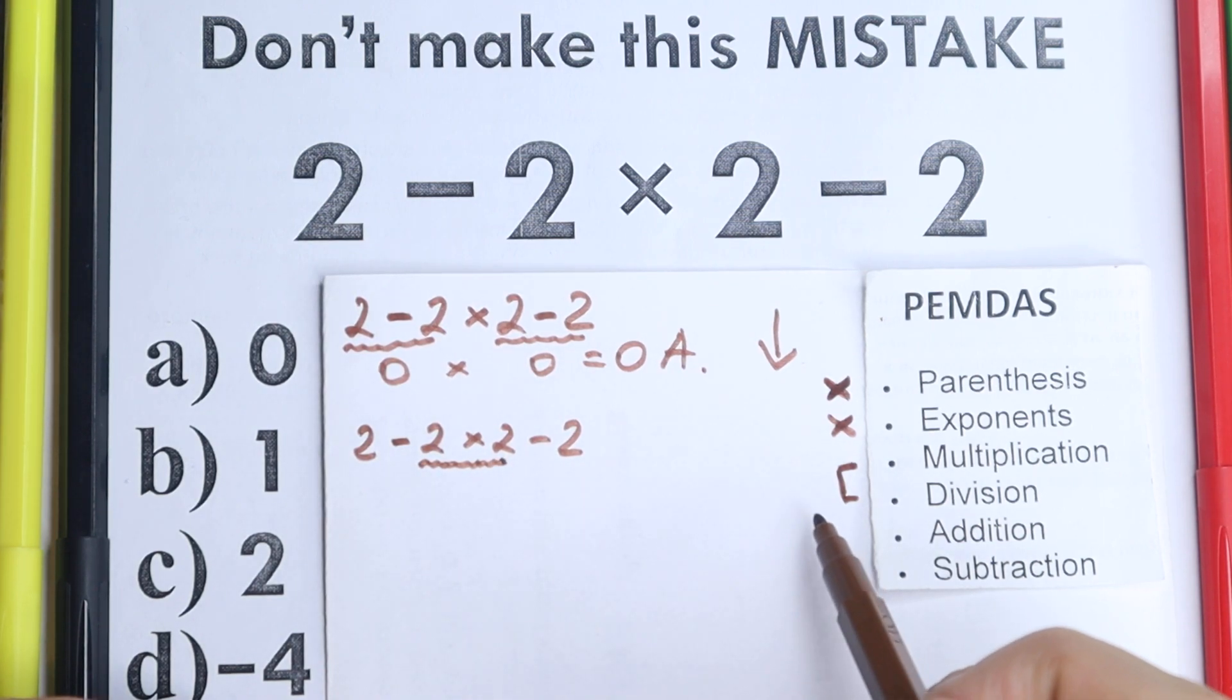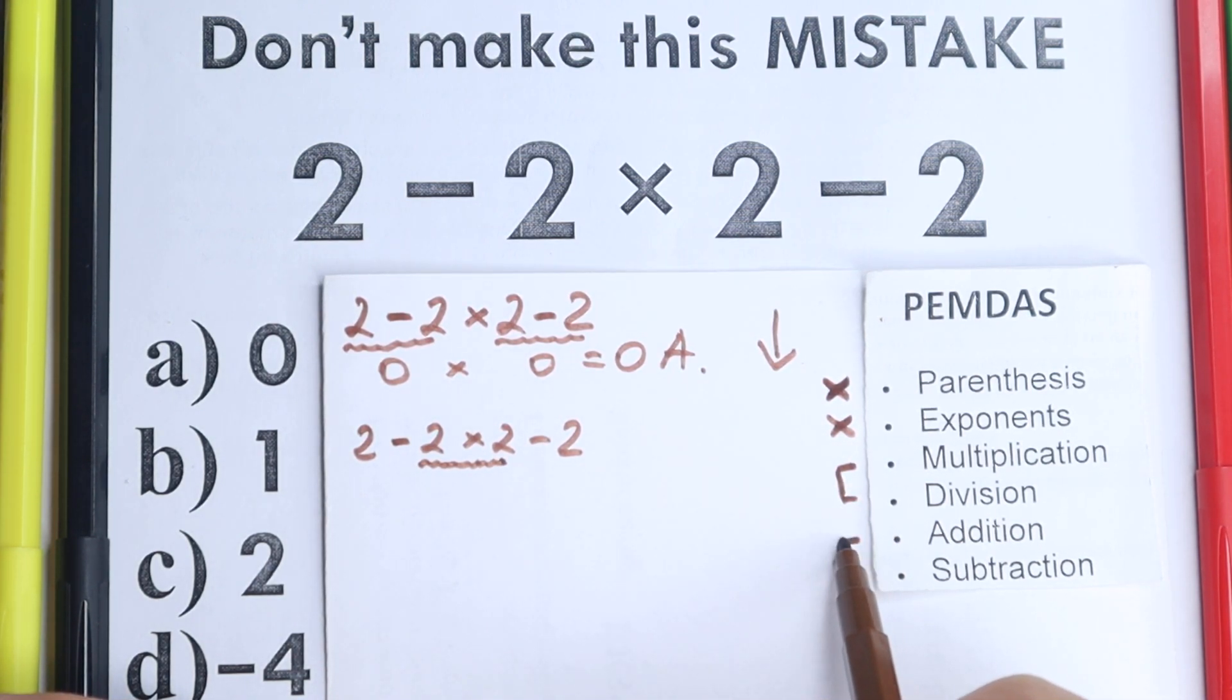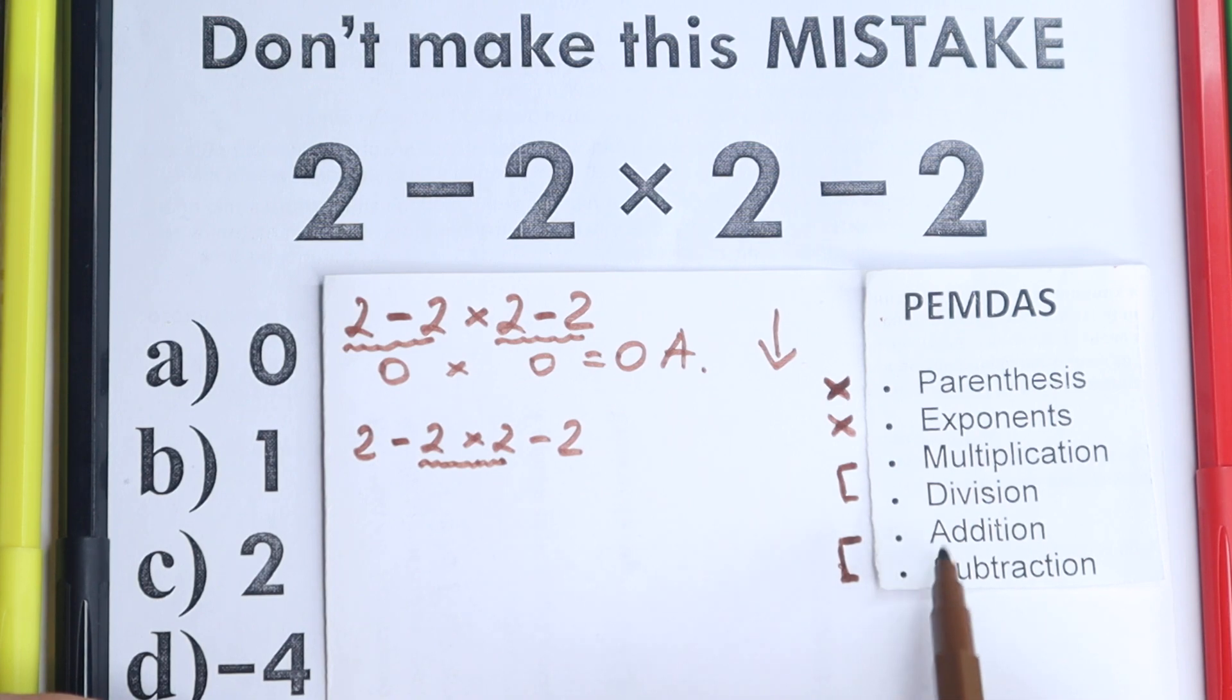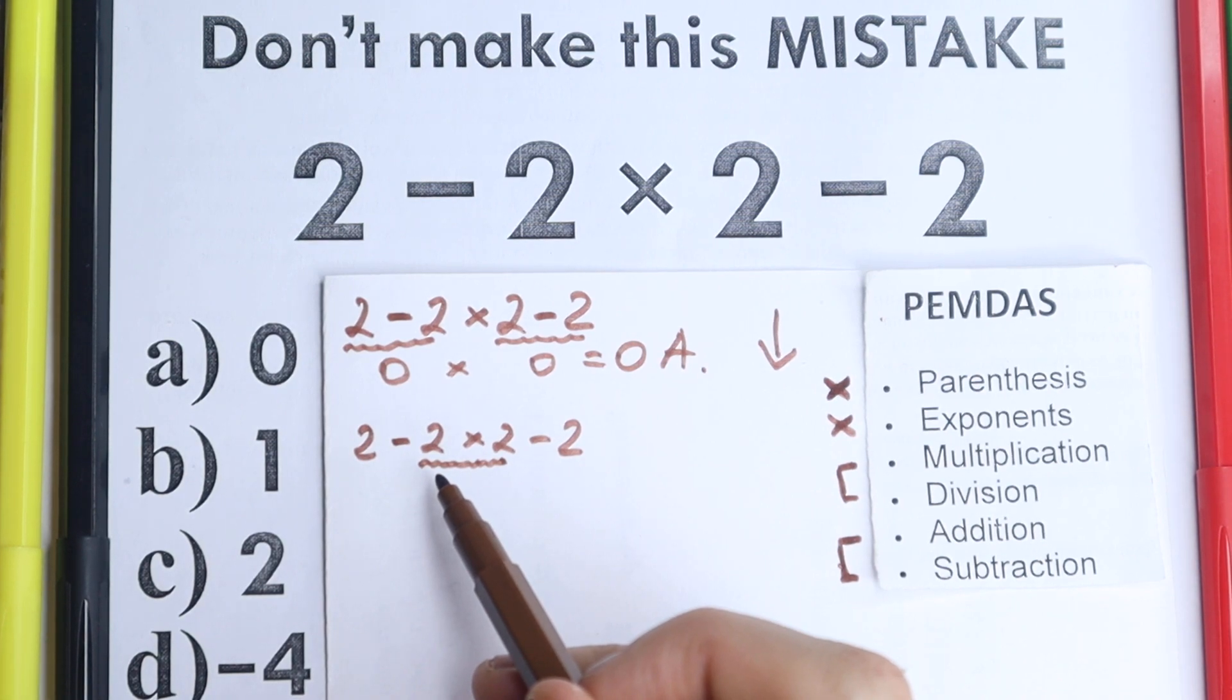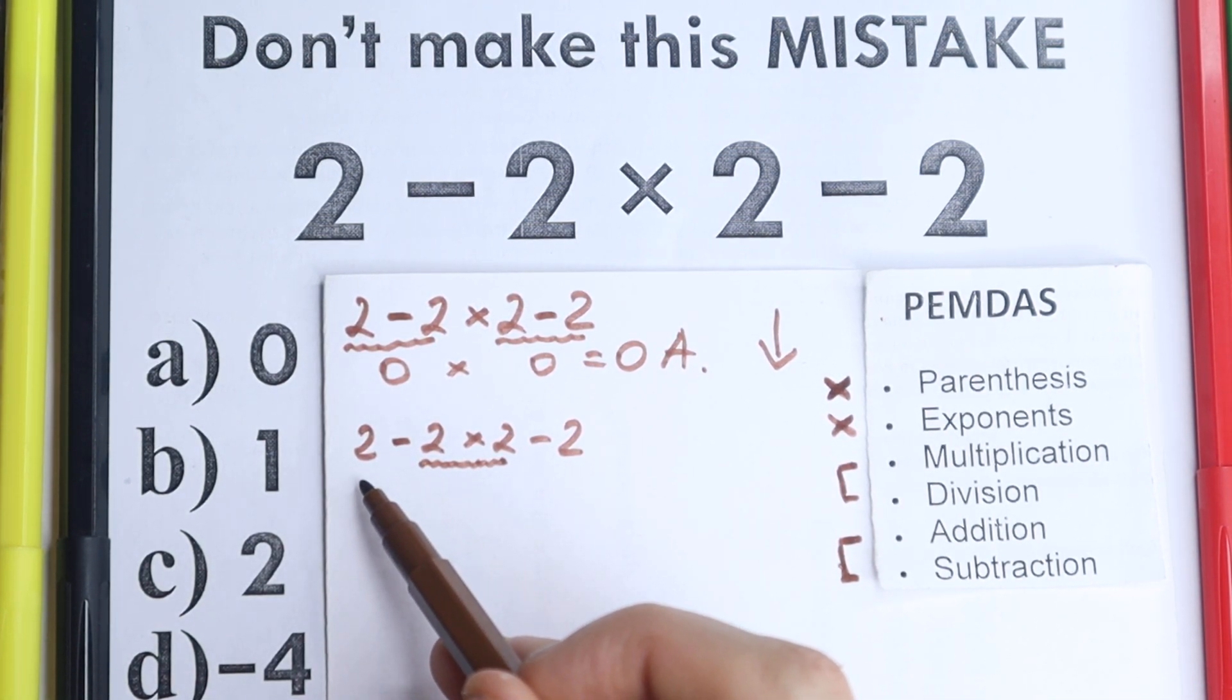So as you can see, according to PEMDAS, we need to multiply it first and then, after this multiplication, we can easily add and subtract. So multiplication and division, this is before addition and subtraction. And in our case, we need to multiply it first, then we need to subtract it first, at second.